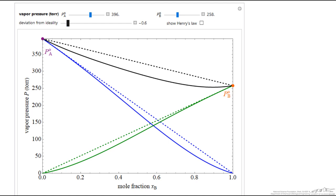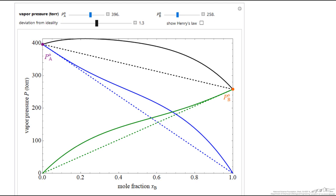We can create positive deviations, and notice the deviation now is positive enough that we have a maximum in the pressure versus liquid mole fraction. We're only showing the pressure versus liquid mole fraction here.